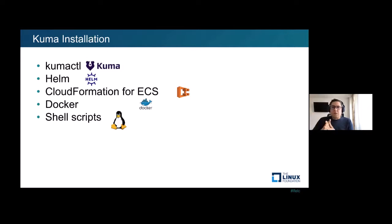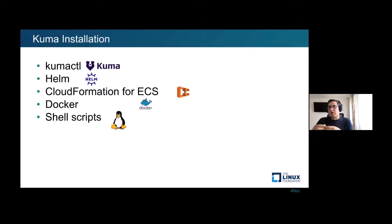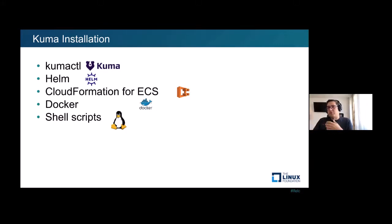So how to install Kuma? We support a number of deployment and installation methods. For Kubernetes deployments, we have our own Kuma command line tool that can be used throughout the lifetime of Kuma to control it, and also at installation time to deploy Kuma in your Kubernetes cluster. We have Helm charts available on Helm Hub, a set of CloudFormation templates to deploy Kuma on ECS, Docker containers, and a number of users who use Kuma in pure Docker without Kubernetes. We also have shell scripts to download and run Kuma on your Linux distribution of choice on virtual machines or bare metals. All of this is documented on our website.